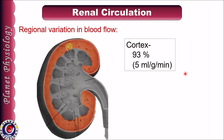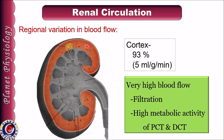Renal blood flow shows regional variations. The renal cortex receives 93% of the total renal blood flow, which is about 5 ml per gram of tissue per minute. This very high blood flow is to provide blood for filtration, as all the glomeruli are present in the renal cortex. A second reason is that proximal convoluted tubules are metabolically highly active tissues, all present in the renal cortex. Distal convoluted tubules are also metabolically active, but the major reason for higher cortical blood flow is for filtration.